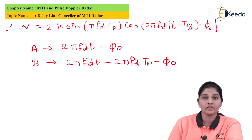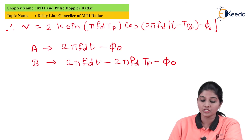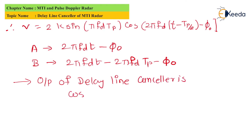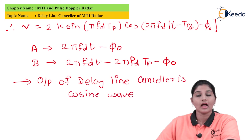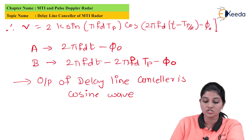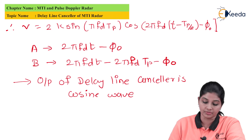From the equation of v, the output of the delay line canceler consists of a cosine wave having a magnitude term 2k·sin(π·fd·tp). We can also say that the output of the canceled signal depends upon the amplitude of the Doppler frequency shift fd and the amplitude of the pulse repetition time tp.